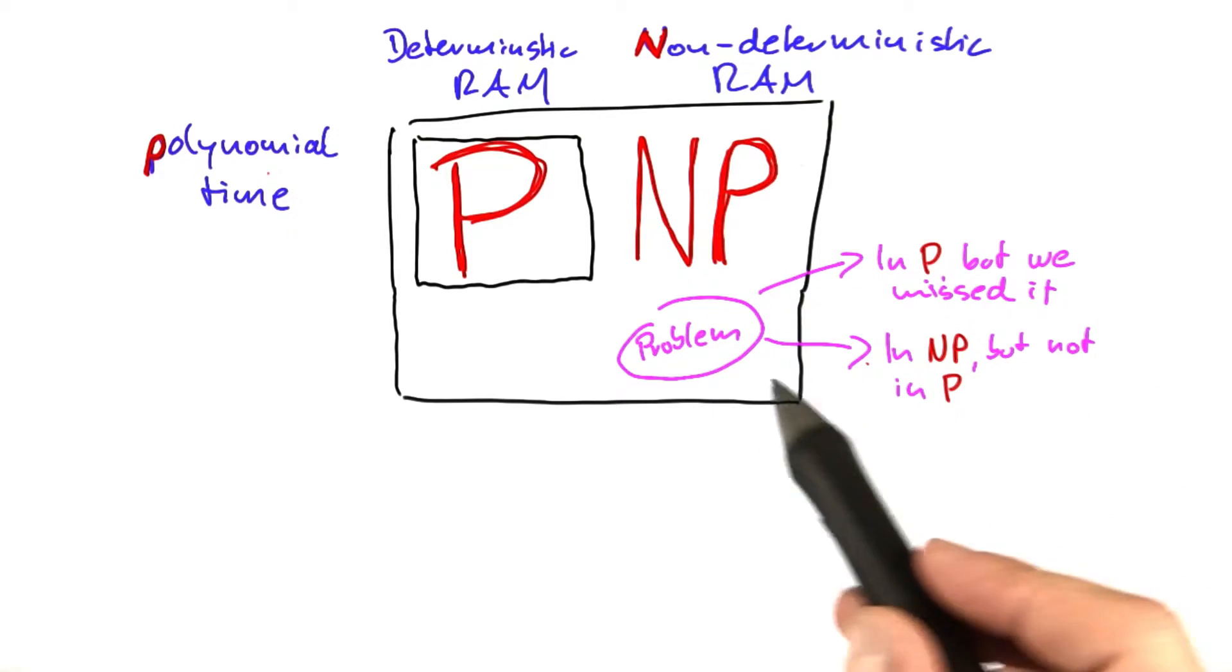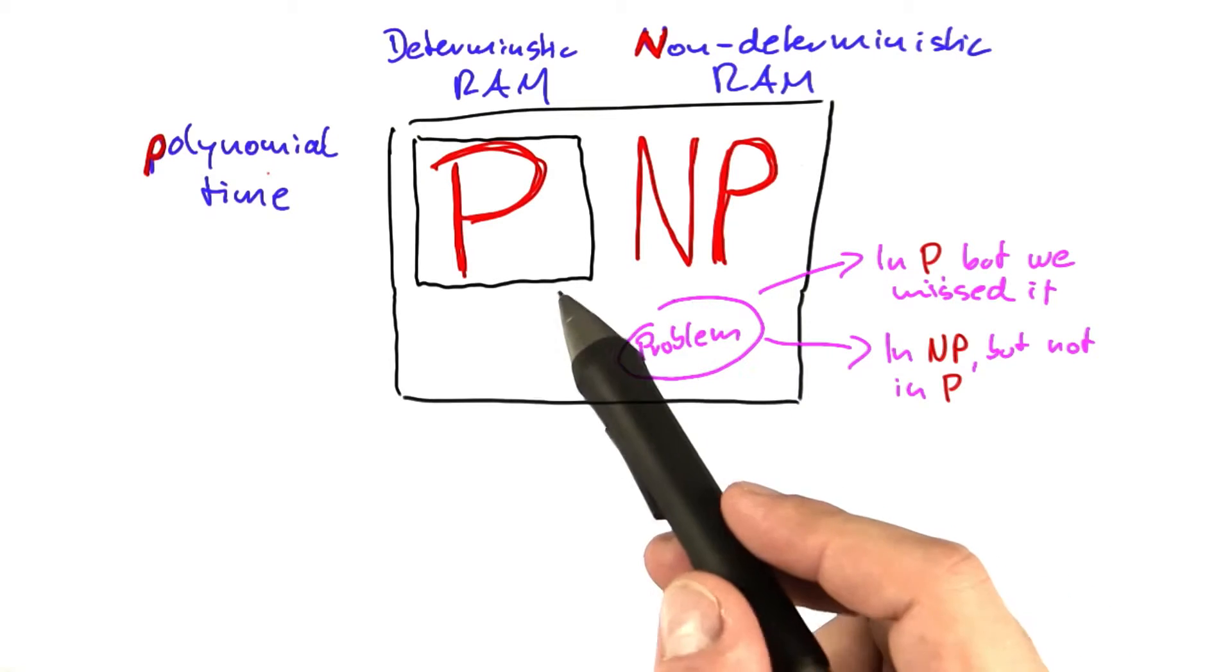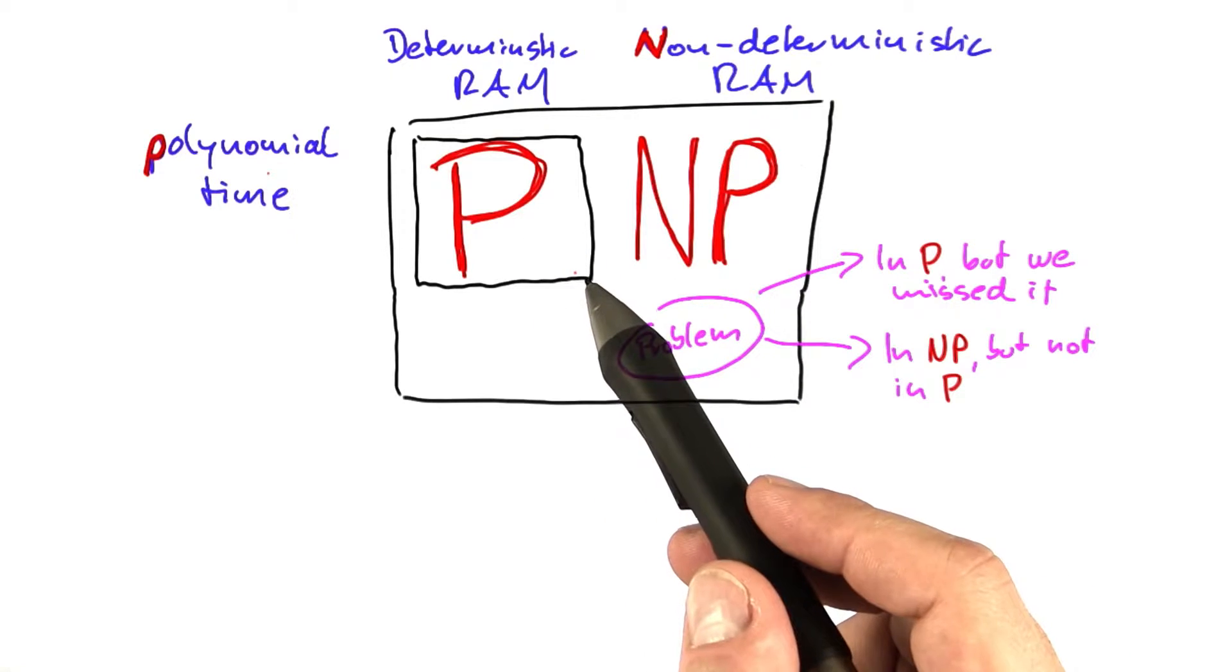Or that's the other possibility. The problem is only contained in NP. So no matter how hard we look, we will never find a polynomial time algorithm for it.